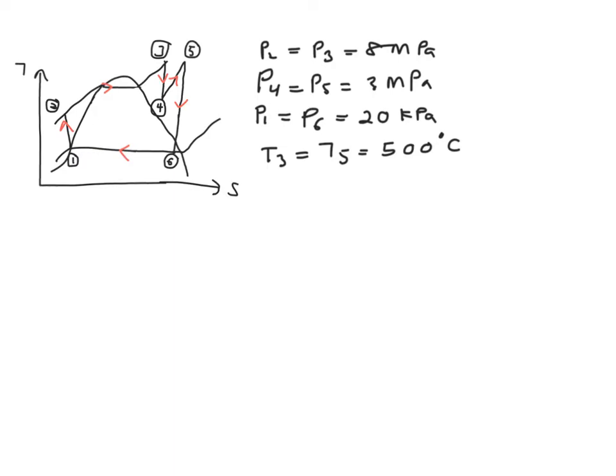You will need to know two known values in order for you to get all the value needed in your property table. So let's have a look at your T-S diagram over here and the information that you have over here.